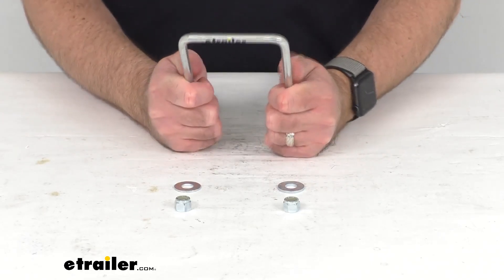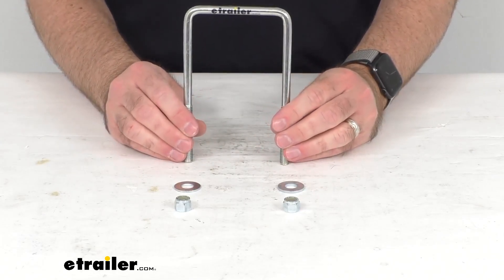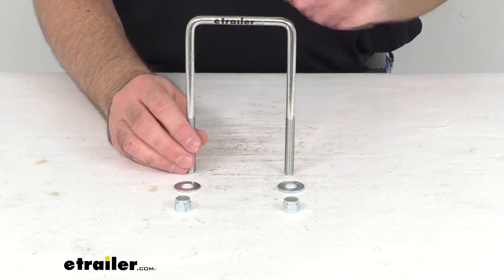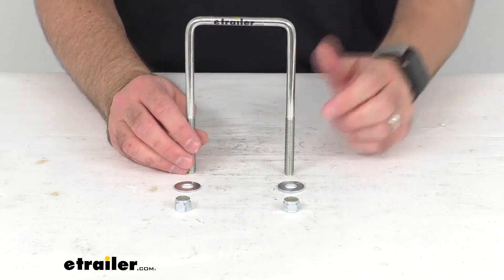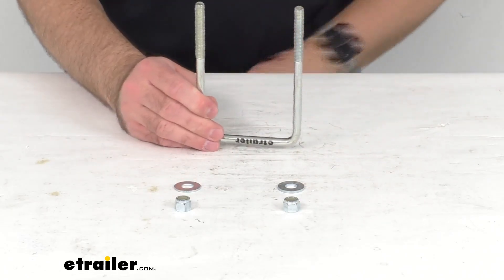This is made in the USA of sturdy zinc plated steel making it resistant to corrosion and it includes everything that you see here before me. You're going to get one U-Bolt, two washers and two nylon lock nuts and let me go ahead and give you some measurements here.